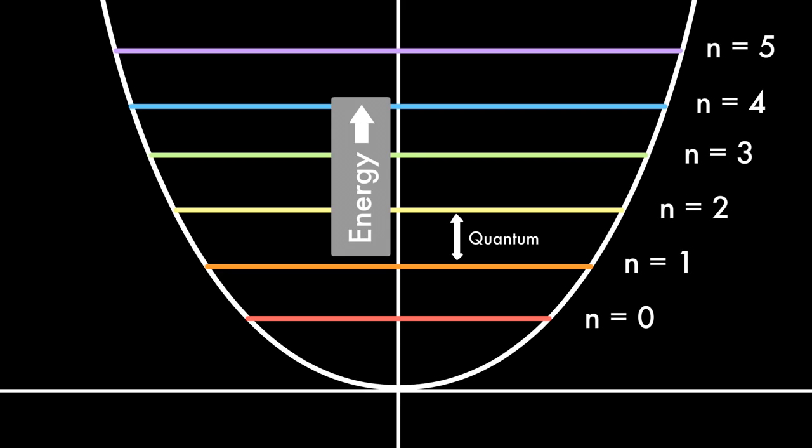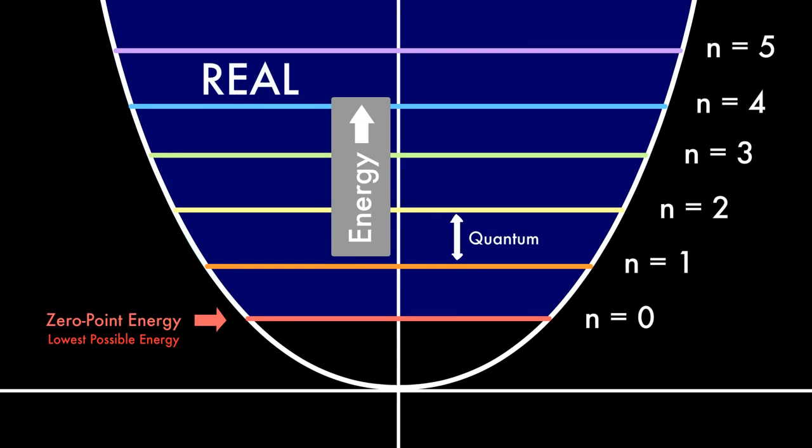What is really interesting about this diagram is what is called the zero point energy, or the energy of the ground state, the lowest possible energy allowed in a quantum system. From this point up on the graph exist real particles, like electrons.